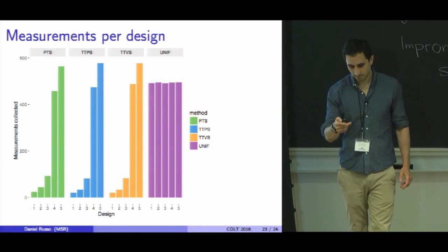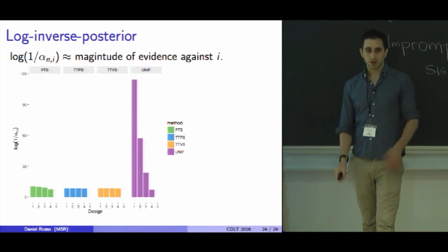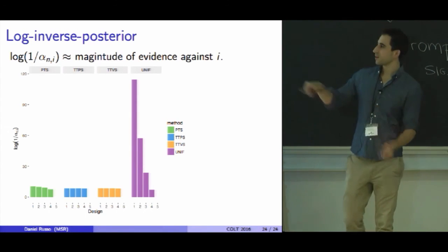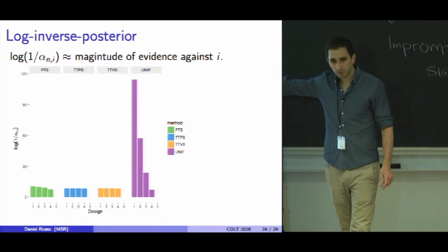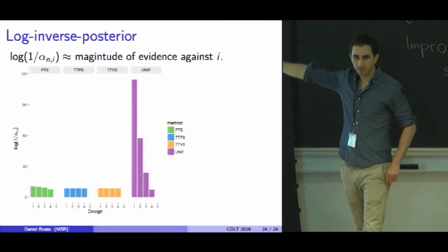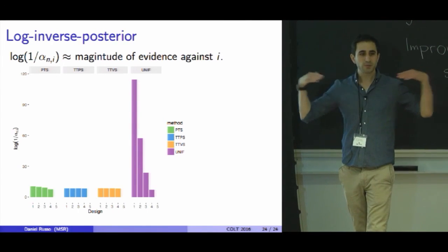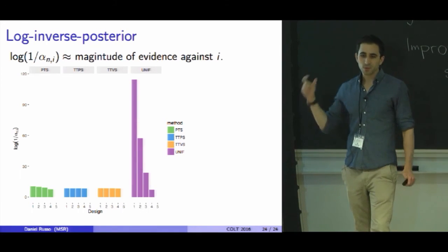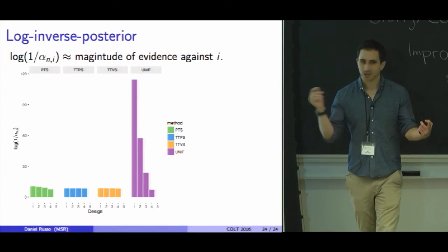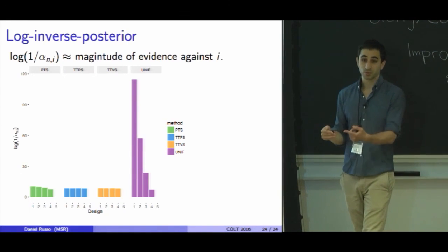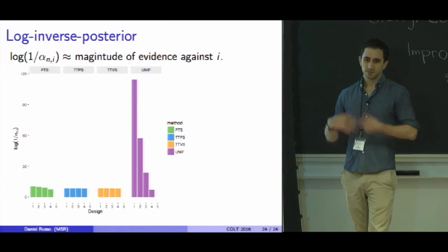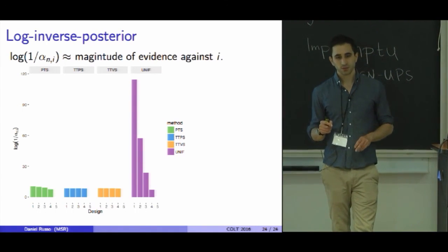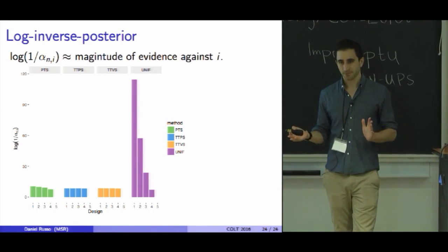In fact, if you look at the log inverse posterior—this is the magnitude of evidence against a design being optimal—those are all completely equal for the allocation rules we've proposed. They're gathering an equal amount of evidence to rule out each of the four bad designs. But under a uniform allocation, you gather an enormous magnitude of evidence that the Bernoulli of 0.1 is not the Bernoulli of 0.5, but much, much less evidence that the Bernoulli of 0.4 is less than the Bernoulli of 0.5. Really, the best you can do is just adjust these levels so that the effort allocated is equal, and some very simple rules automatically do that. That's the takeaway.